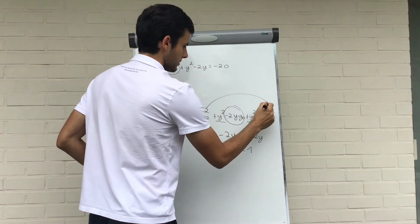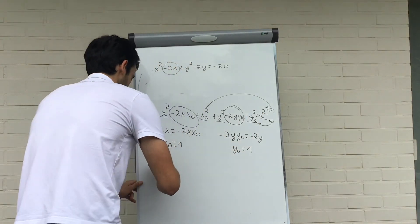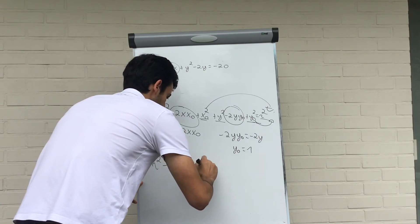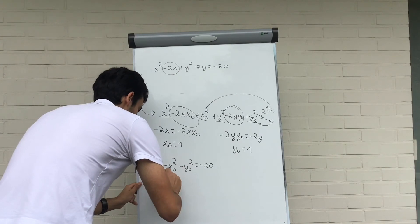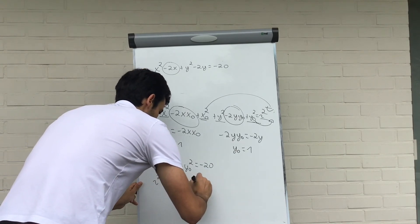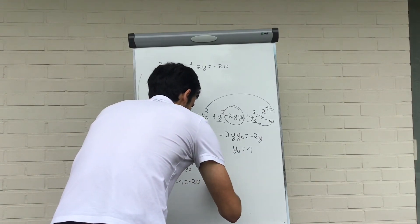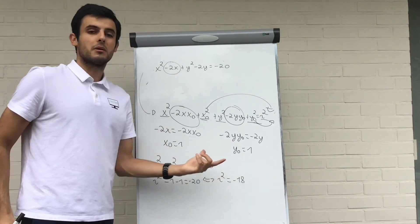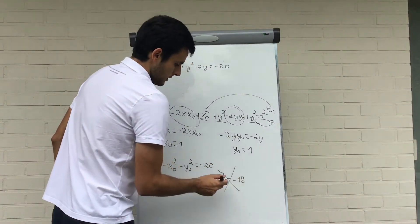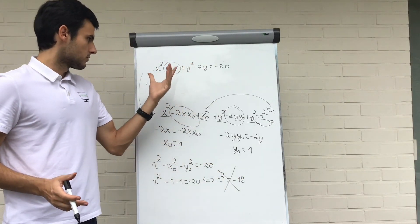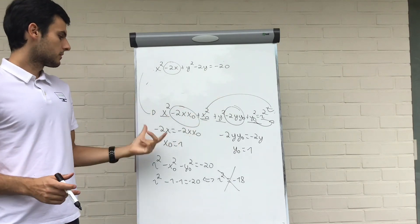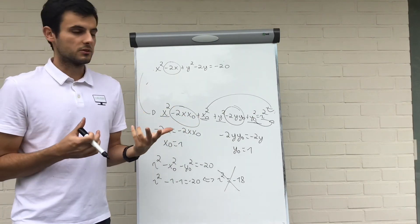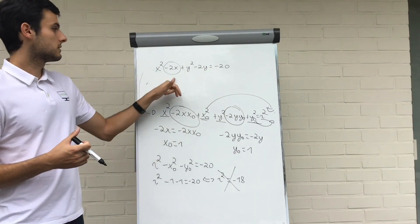Now these are numbers, so we put them to the other side. We get r squared minus x₀ squared minus y₀ squared equals minus 20. So r squared minus 1 minus 1 equals minus 20, or r squared equals minus 18. Something squared equals minus 18 — this cannot be, so the radius does not exist, and this is not the equation of a circle. You can always find an x₀ and a y₀, but the radius will not always be positive. If the radius is not positive, the circle does not exist.